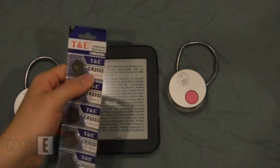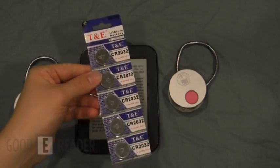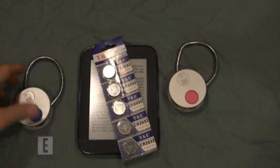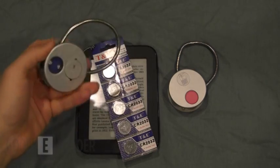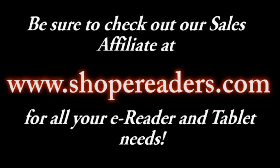I mean, you go to the store and you forget what code they are or you end up not getting the right kind. So ShopEReaders includes five free batteries with every purchase of an LED reading light and the lights come preloaded with batteries anyways.